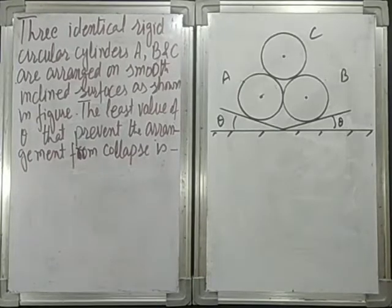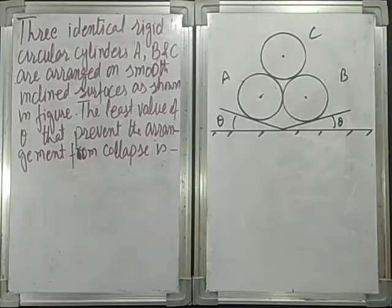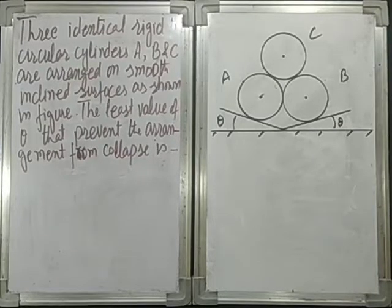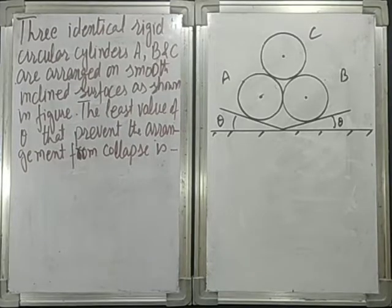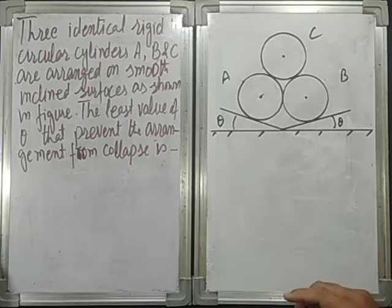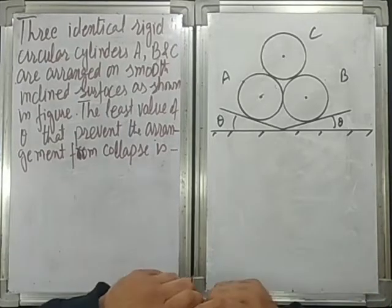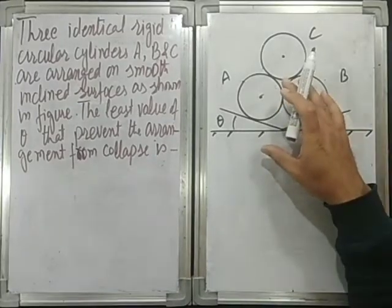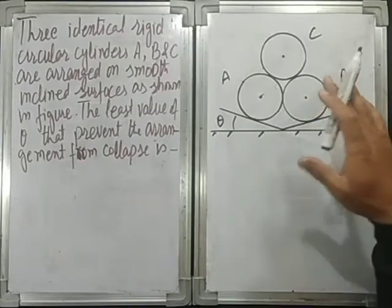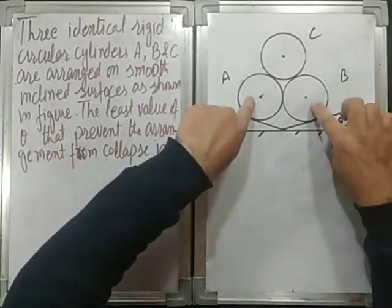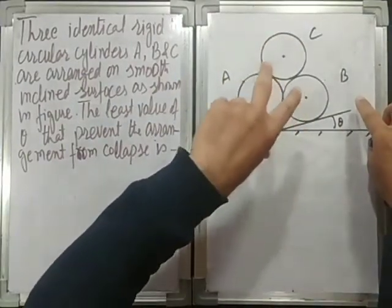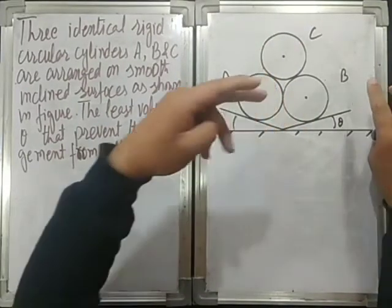Three identical rigid circular cylinders A, B and C are arranged on smooth inclined surfaces as shown in the figure. The least value of theta that prevents the arrangement from collapse is to be found. From our day-to-day life experience, if you have three cylinders or three drums on a horizontal surface, there are many chances that these two will go far and lower — that's what we call collapsing. Especially on a frictionless surface, it will definitely happen.